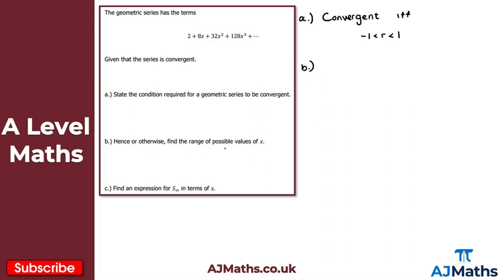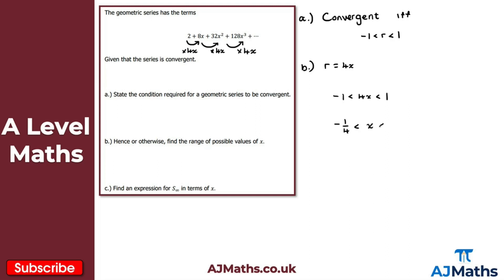For part B, find the range of possible values of x. First we find the common ratio: to get from 2 to 8x we multiply by 4x, and this is consistent for each subsequent term, so R equals 4x. Using the condition that R must be between minus 1 and 1, we have minus 1 less than 4x less than 1. Dividing through by 4 gives x between minus a quarter and positive a quarter.